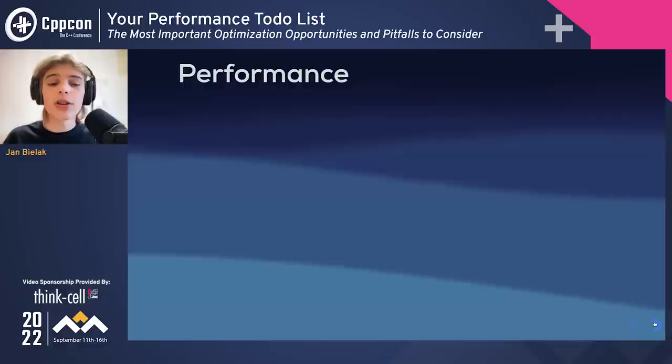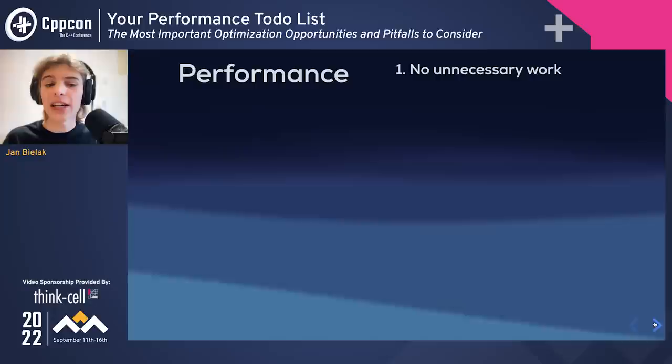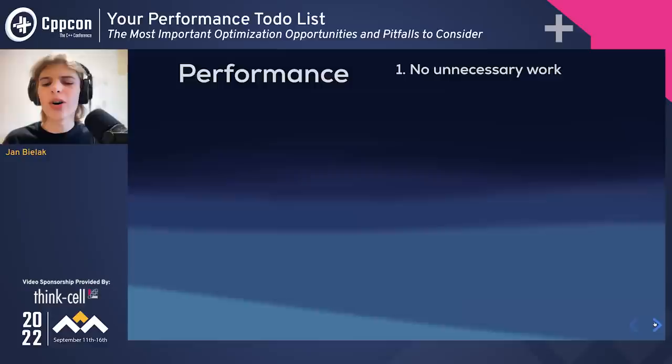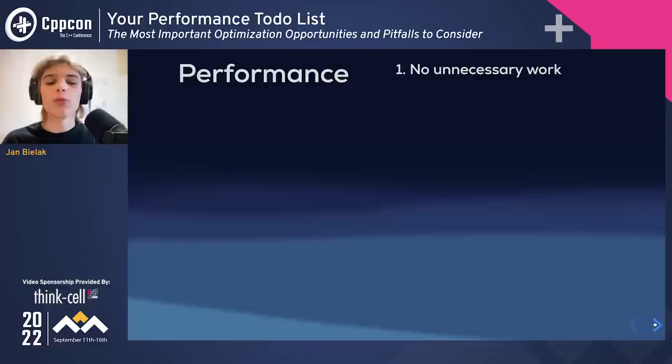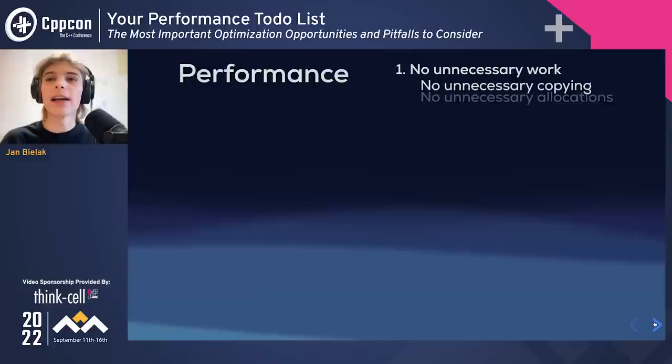What does it exactly mean for a program to be efficient? For this talk, I'll say that it requires a program to fulfill five criteria. The first one is: don't do unnecessary work. An efficient program should not waste time performing any computations which are redundant. Why would a program be made to do unnecessary work in the first place? The answer is: by mistake. The two probably most common examples in C++ are unnecessary copying and unnecessary memory allocations.